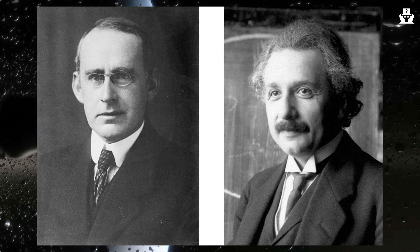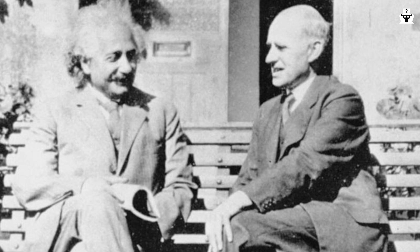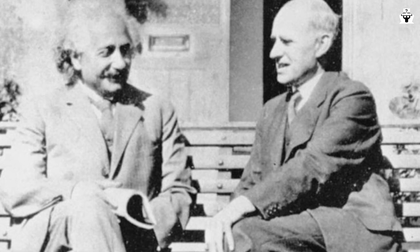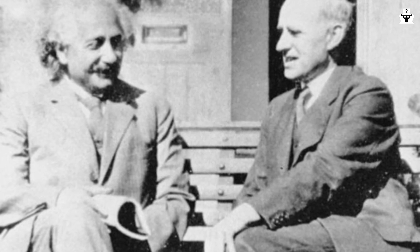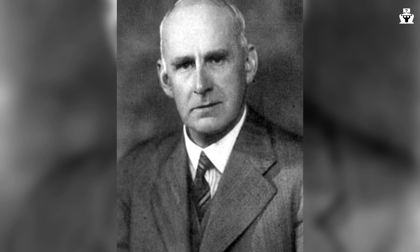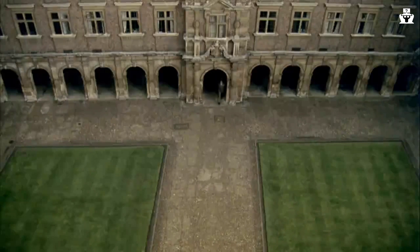Who is Arthur Eddington? Arthur Eddington was a British astrophysicist and mathematician who lived from 1882 to 1944. He was educated at Cambridge University, where he studied mathematics and astronomy, and later became a professor at the university.